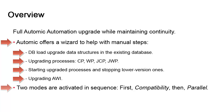There are two modes that are activated sequentially. First, the compatibility mode, during which higher version processes are installed while lower ones remain active. During this phase, you'll notice a substantial degrading of performance. When upgraded processes are ready to take over, it enters the parallel mode, where both versions coexist.